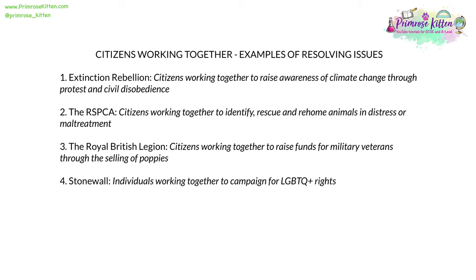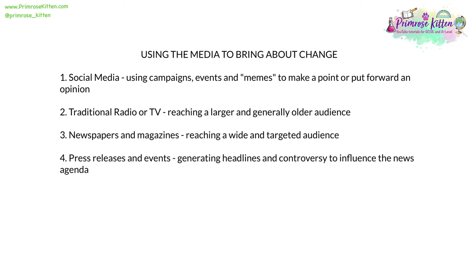We can look at examples of how citizens can work together to resolve particular issues. Extinction Rebellion is an example of citizens working together to raise awareness of an issue through protest and civil disobedience. The RSPCA is an example of citizens working together to take practical action to identify, rescue and re-home animals in distress or maltreatment. The Royal British Legion is an example of citizens working together to fundraise, in this case for military veterans. And Stonewall is an example of individuals working together to campaign for the rights of a particular group. The media can also be used to bring about change through social media campaigns, events and memes; traditional radio or TV, which reaches a larger and generally older audience; newspapers and magazines, which reach a wide and targeted audience; and traditional press releases and events which can generate headlines and controversy, influencing the news agenda.